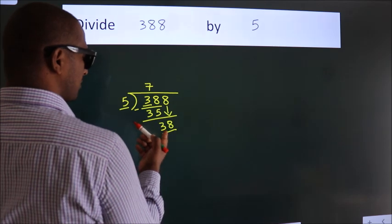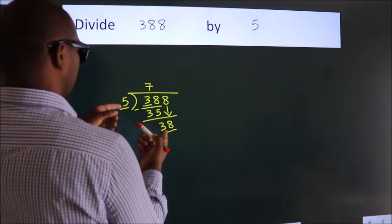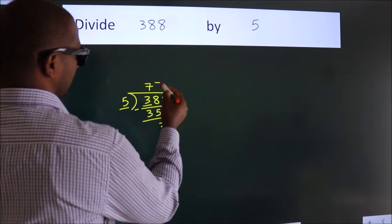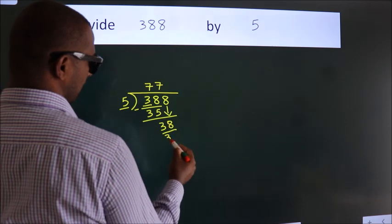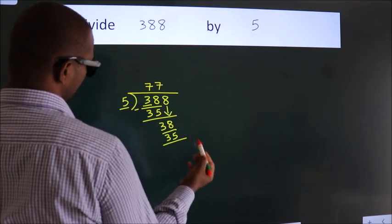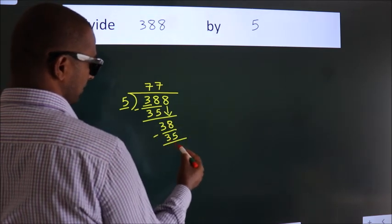A number close to 38 in the 5 table is 5 times 7 equals 35. Now we subtract. We get 3.